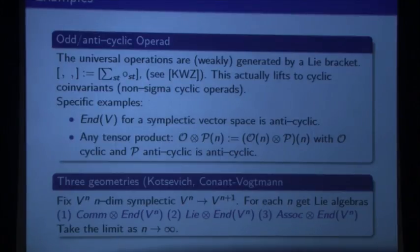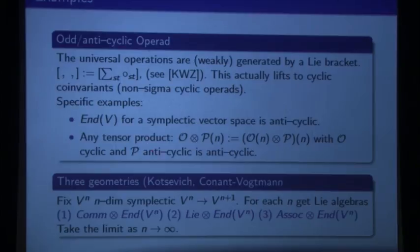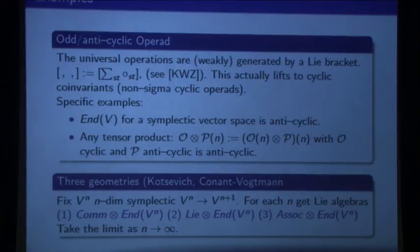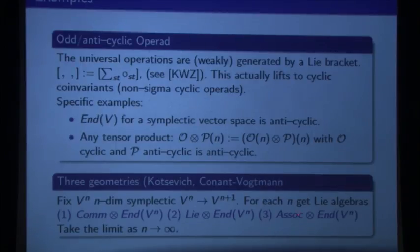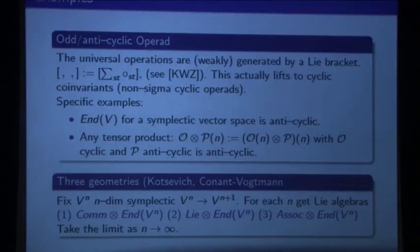There's a trick: if you take an odd cyclic operad and tensor it with a cyclic operad, you get an odd cyclic operad — odd tensor even is odd, same as usual. So you do this for your favorite cyclic operads — com, Lie, and associative. You get a Lie algebra, but that's exactly on the co-completion, on the direct sum of the S_n invariants. That's where the Lie algebra lives. And if you have a sequence of vector spaces you can take a limit, and then you get these Lie algebras that Kontsevich is looking at. So that's an application — that's where you find these things.